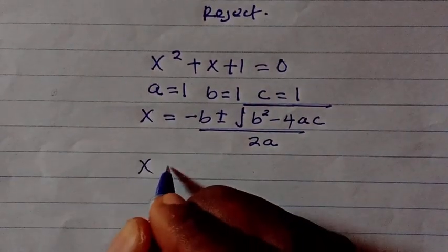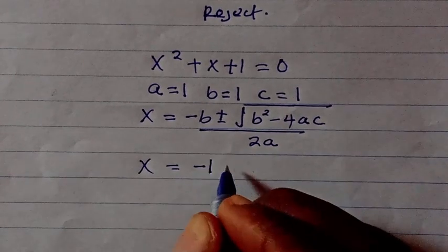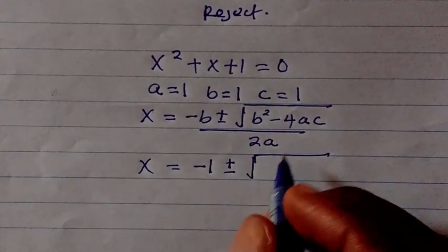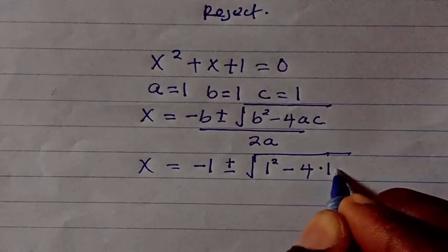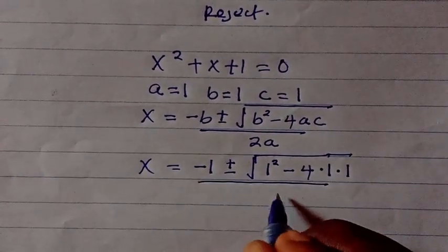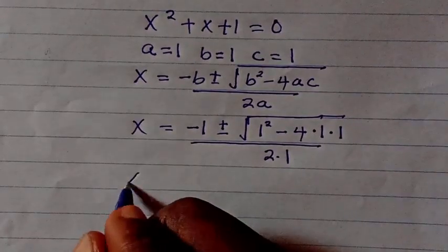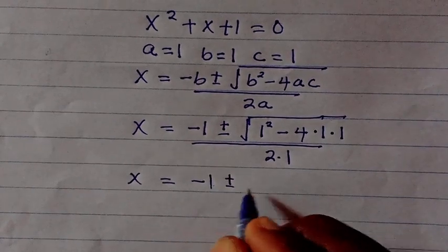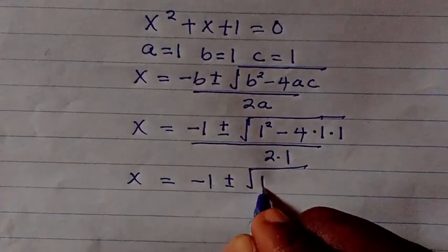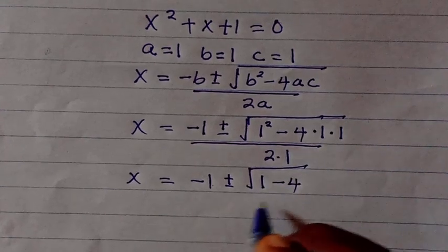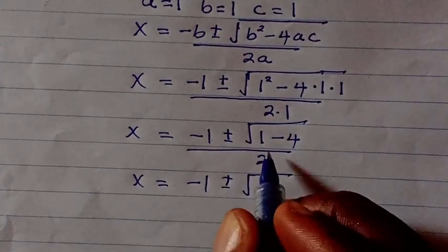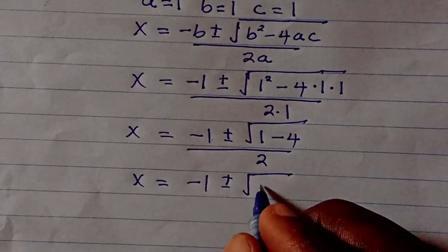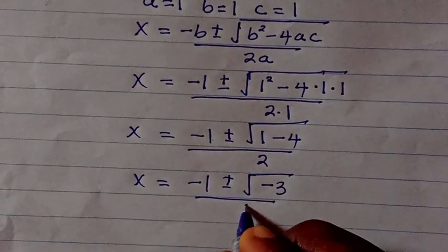Substituting in, we have x equals negative 1 plus or minus the square root of 1 squared minus 4 times 1 times 1, all divided by 2 times 1. So x equals negative 1 plus or minus the square root of 1 minus 4, all divided by 2. That gives us x equals negative 1 plus or minus the square root of negative 3, divided by 2.